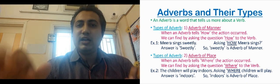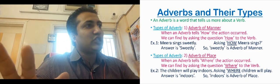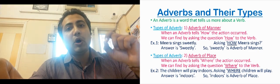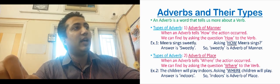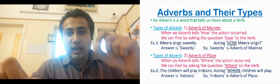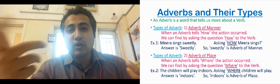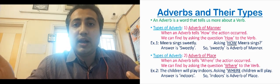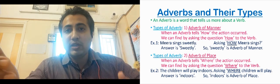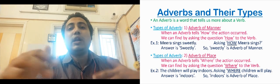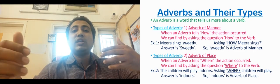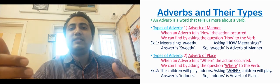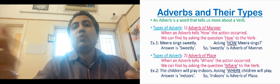Let us try to understand the different types of adverbs. The first one is adverb of manner. Adverb of manner tells how the action was done. To identify it, we have to ask the question how to the verb. If we ask the question how to the verb and get an answer for how, then it is adverb of manner.